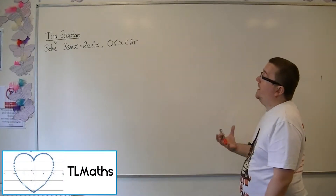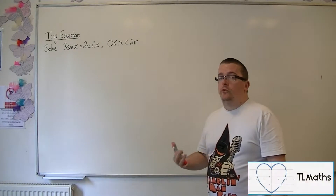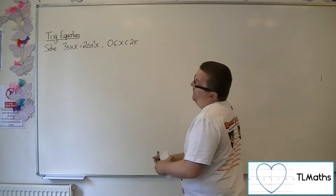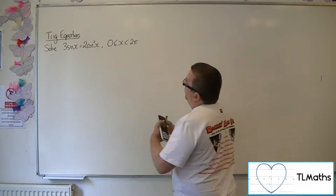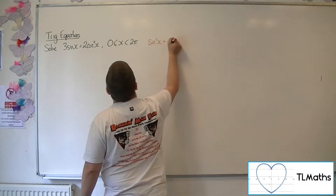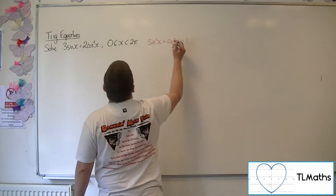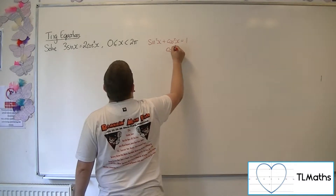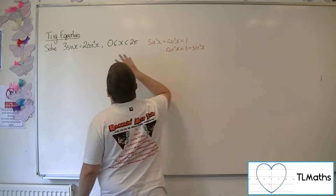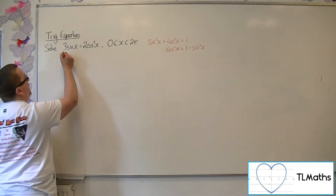Let's say I need to solve 3 sine x equals 2 cosine squared x between 0 and 2 pi radians. Now because we've got that cos squared there, we're going to want to bring in the trigonometric identity sine squared plus cos squared equals 1. If you rearrange that to get cos squared is 1 minus sine squared, then we can make this a quadratic equation just in terms of sine.